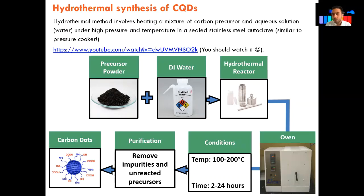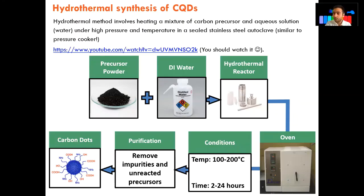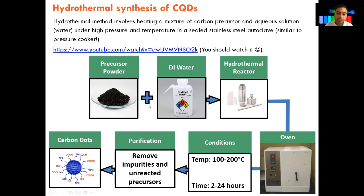The hydrothermal method is exactly similar to a pressure cooker. What we need: take the organic molecule, dissolve it in water — because organic molecules usually dissolve in water, but if not, you can use other solvents. Then we put it in the reactor — the pressure cooker — seal the lid so no air can go out, put it in the oven. We use temperatures between 100 to 200 degrees and times between 2 to 24 hours. Because of the high temperature and pressure, the reaction happens, and at the end we do a purification to get rid of any impurities and unreacted ingredients, and you have the carbon quantum dots.